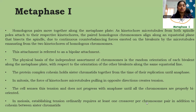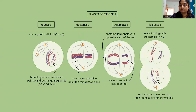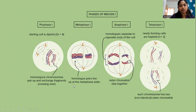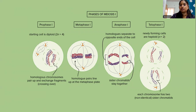In meiosis, establishing tension ordinarily requires at least one crossover per chromosome pair in addition to cohesin between sister chromatids. Here you can see the phases of meiosis one: in prophase one, the diploid cell's homologous chromosomes pair up and exchange fragments through crossing over; they then align at the metaphase plate; in anaphase one, the homologues separate to opposite ends of the cell while sister chromatids remain together; and in telophase one, the newly formed cells are haploid, with each chromosome still consisting of two sister chromatids.